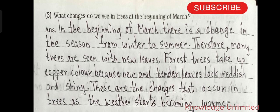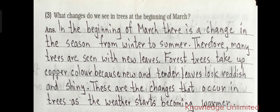Question three: what changes do we see in trees at the beginning of March? In the beginning of March there is a change in season from winter to summer. Therefore many trees are seen with new leaves. Forest trees take on a copper color because new and tender leaves look reddish and shiny.